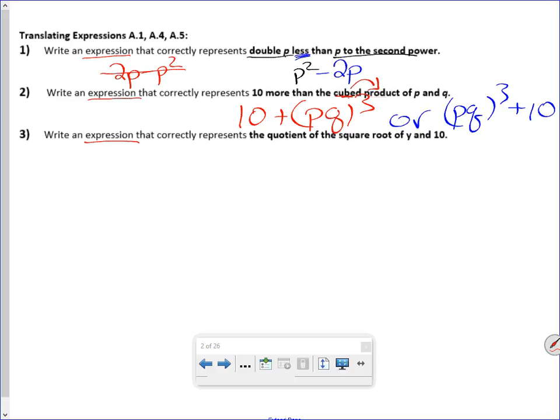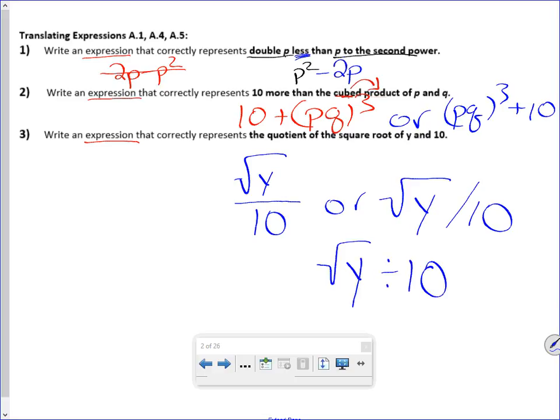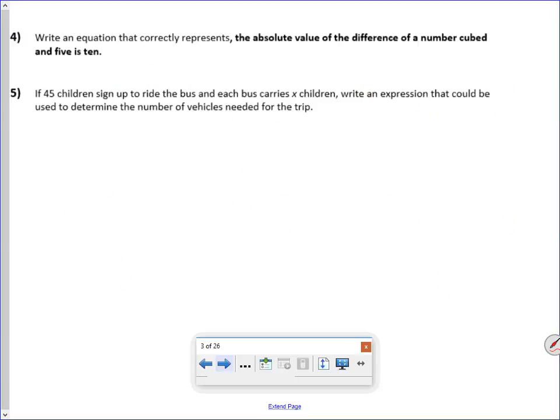Write an expression that correctly represents the quotient of the square root of y and 10. So we're going to need to be dividing, and on the top we have the square root of y, and on the bottom we have 10. I'd also accept it if you just decided you wanted to do that, or heck, I'd even accept that. What I will not accept is that, because that's the square root of the quotient, not the quotient of the square root.